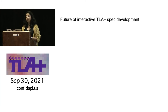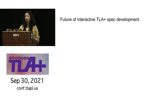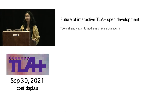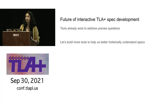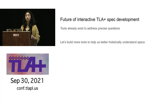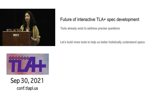We've done a brief, admittedly non-exhaustive survey of existing tools. What we've generally found is that well-defined tools already exist to address precise questions. Our vision for the future is to build out more tools to help answer holistic questions like 'is the spec behaving as intended?' We hope some of these ideas will spark discussion.